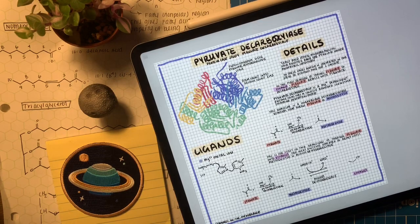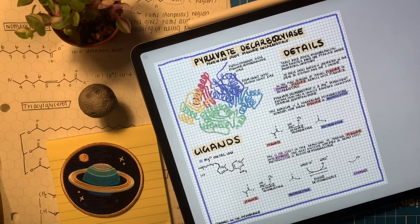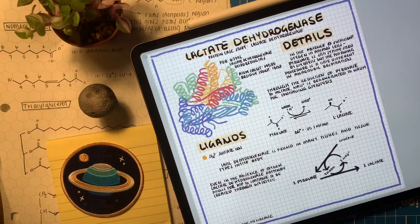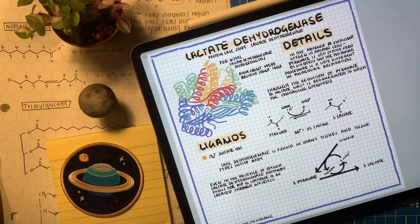But in yeast and other microorganisms, it actually forms ethanol. It goes through a two-step process where it first forms acetaldehyde and then forms ethanol. So I did a really short protein case study on some of the proteins that do these anaerobic respiration reactions.